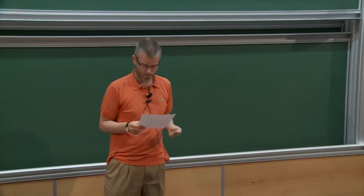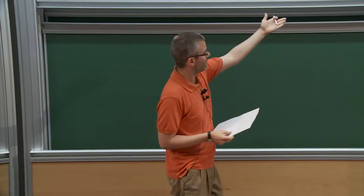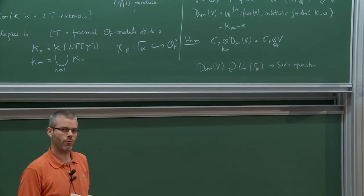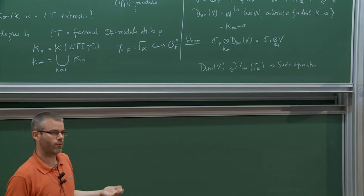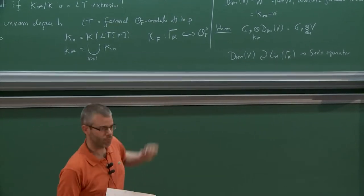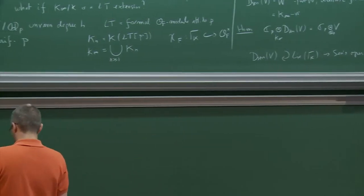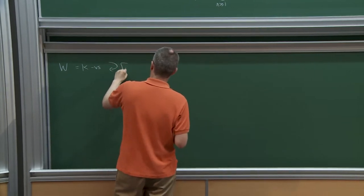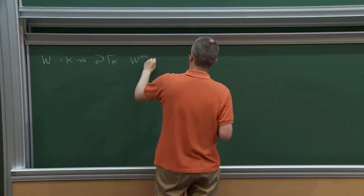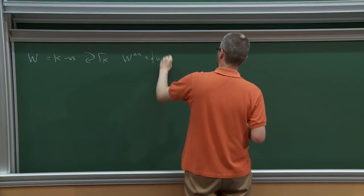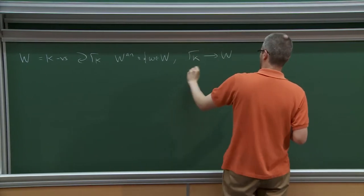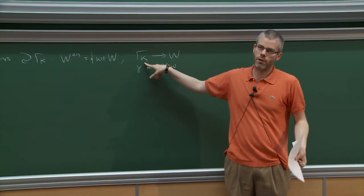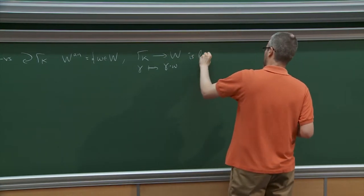This is an old definition of Sen from about 30 years ago. If you are interested in having Γ_K act and you are doing this now, you would probably look not at the set of finite vectors but at the more modern notion due to Schneider and Teitelbaum of locally analytic vectors. Being locally analytic is a more natural condition if you want to look at the action of the Lie algebra of Γ_K.